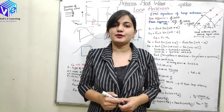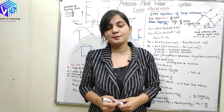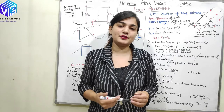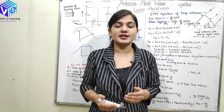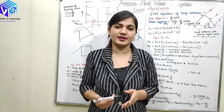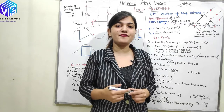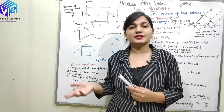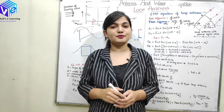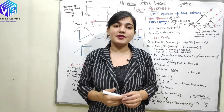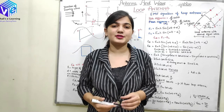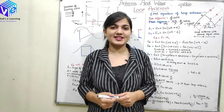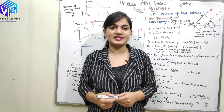That concludes this video. I hope you understood how to derive the induced EMF in a loop antenna and how the induced EMF changes with the orientation of the loop with respect to the incoming wave. This variability in induced EMF with orientation is used for various practical purposes, which I will cover in another video. Stay tuned for the upcoming videos. I hope you liked this video — please like, subscribe, and stay tuned. Thank you.